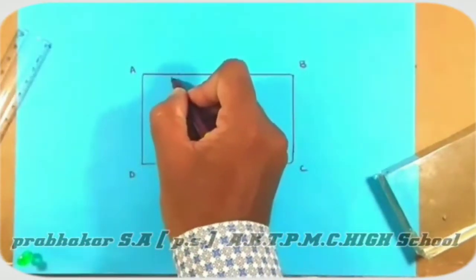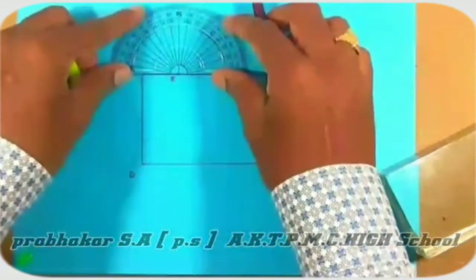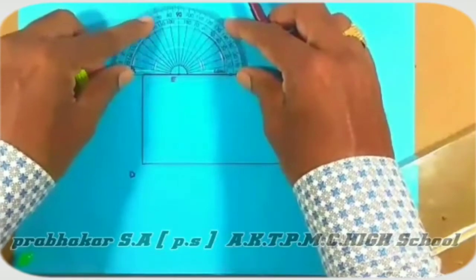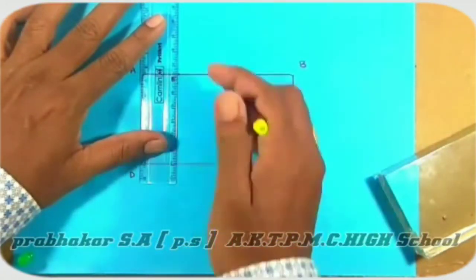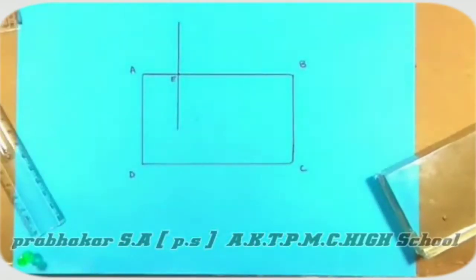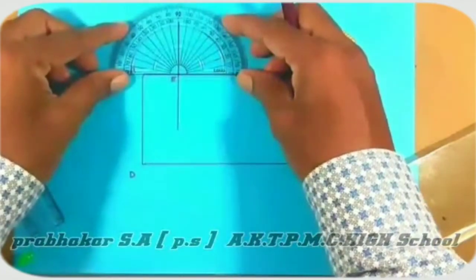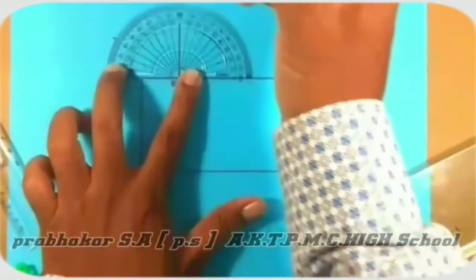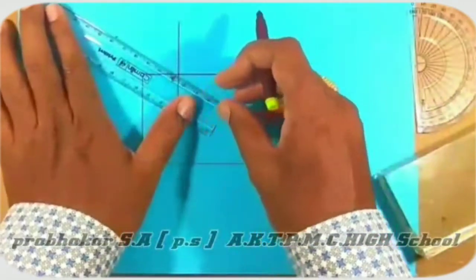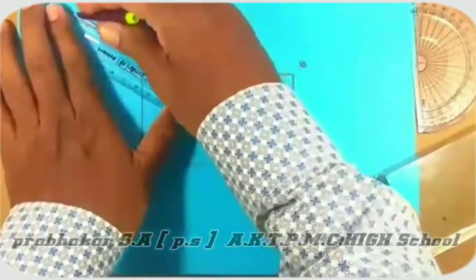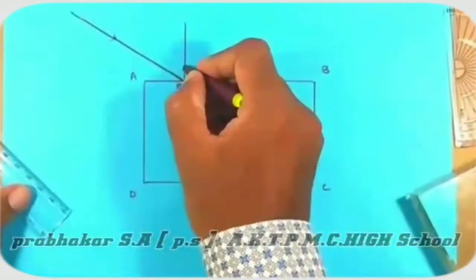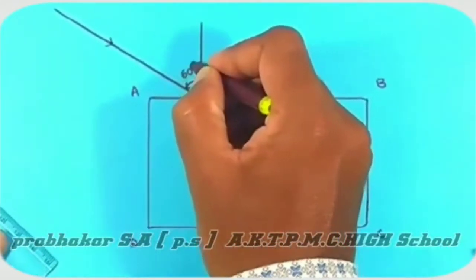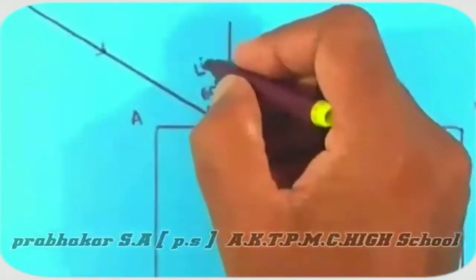Now, put a point E. At that point, draw the perpendicular line to the longer side AB with the help of a scale. Now, we will draw an incident ray which makes an angle of 60 degrees with the normal. This line represents the incident ray, and the angle between the incident ray and the normal is considered as the angle of incidence. Here, the angle of incidence is 60 degrees.